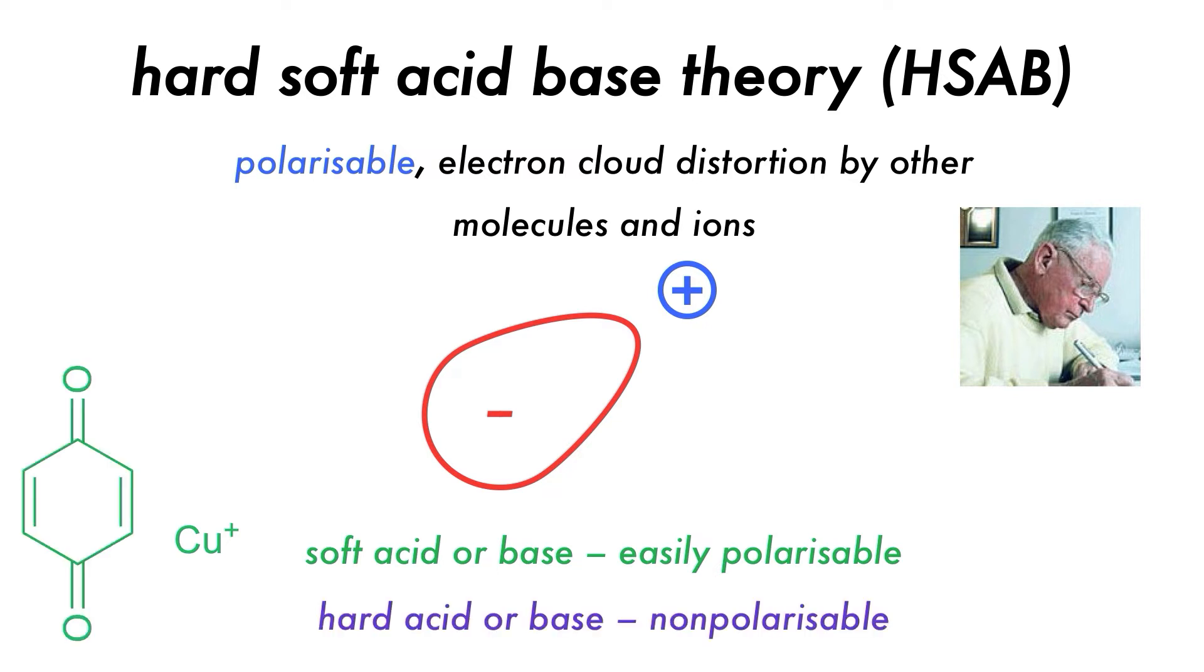A hard Lewis acid or base, however, is non-polarizable, or at least hard to polarize, and they are typically small and highly charged, like the lithium cation, but they can also be molecular, like boron trifluoride, BF3.